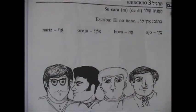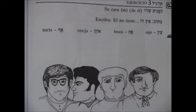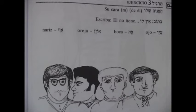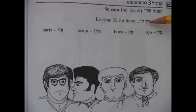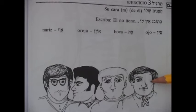Entonces vemos que nos está pidiendo: Ketob, o sea, escribe. Ein lo. Ustedes lo van a hacer en su cuaderno de apuntes, pero acá les voy a ayudar a desarrollarlo. Lo que tú tienes que escribir es: Ein lo — él no tiene, no tiene él. Ein lo, Ein lo.